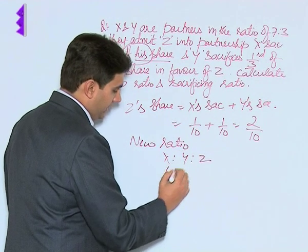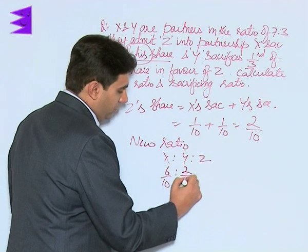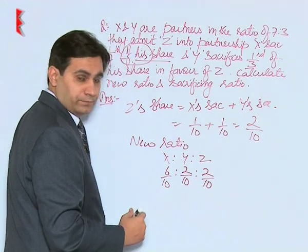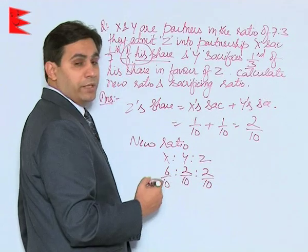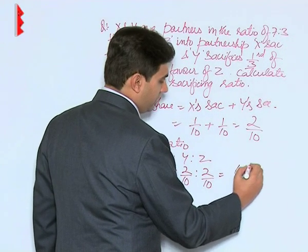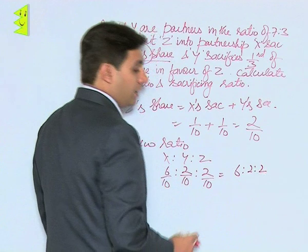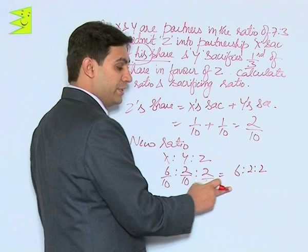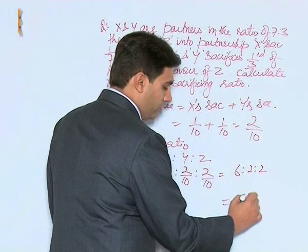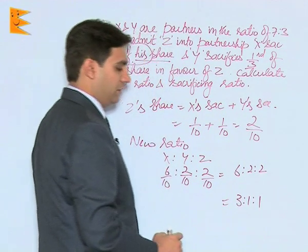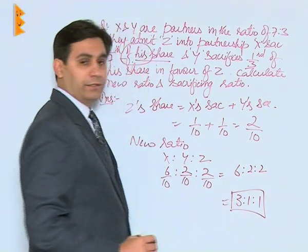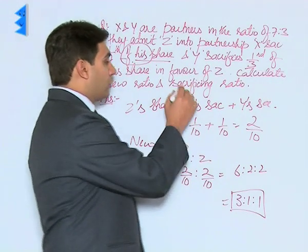The new ratio for X, Y, and Z would be: X = 6/10, Y = 2/10, Z = 2/10. With 10 as the common denominator eliminated, the ratio is 6:2:2. Since 2 is a common factor, we can cancel it out, giving a new ratio of 3:1:1.